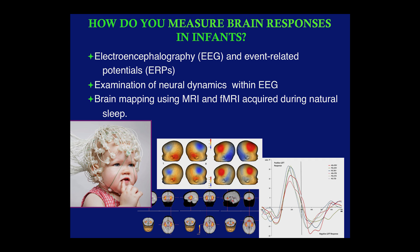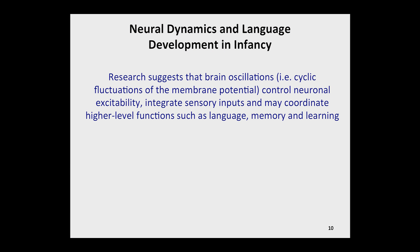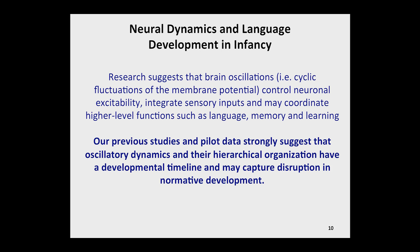Research suggests that brain oscillations — cyclic fluctuations of the membrane potential in brain cells — control neuronal excitability, integrate sensory inputs, and may coordinate higher-level functions such as language, memory, and learning. However, neurodynamics is just beginning to be studied in the human infant. Our previous studies and pilot data strongly suggest that oscillatory dynamics and their hierarchical organization have a developmental timeline and may capture disruption in normative development.